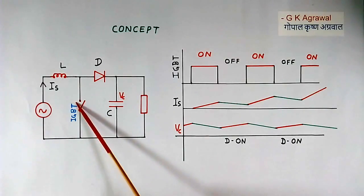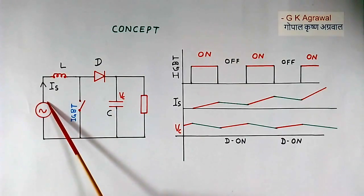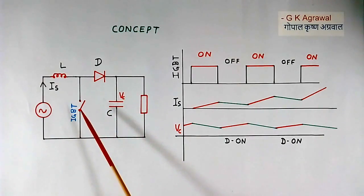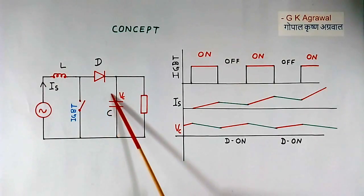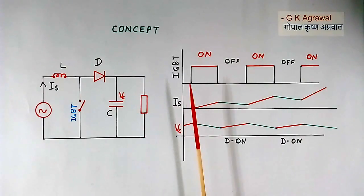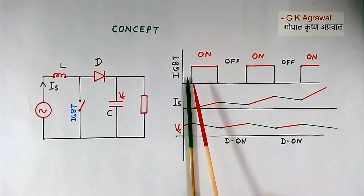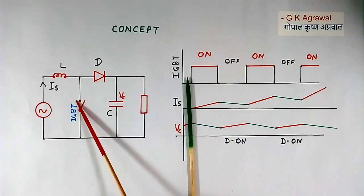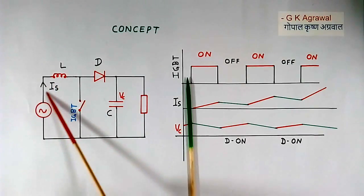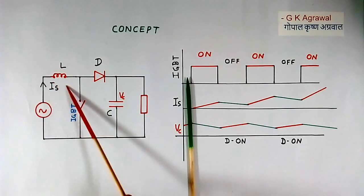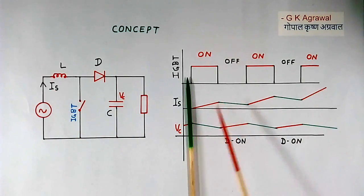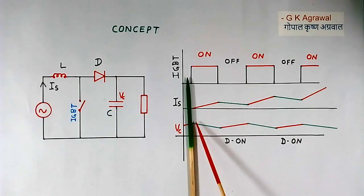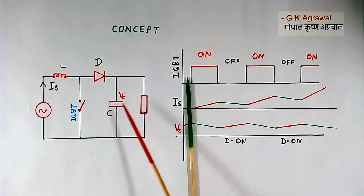In the beginning, this IGBT is open. If the supply is positive, current will flow and this capacitor will be charged. The function of IGBT will start after the capacitor has been charged. Now suppose at this point I switch on this IGBT. When IGBT is ON, there is a short circuit here, so current in this reactor will start increasing — IS is increasing. During this period, the load will take current from the capacitor, and the capacitor will discharge.